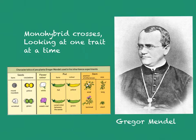In this video we're going to look at monohybrid crosses, and what that means is simply that you're looking at one trait at a time. So you're looking either just at the seed shape, or just at the seed color, or just at the flower color — not at two or three traits at the same time.